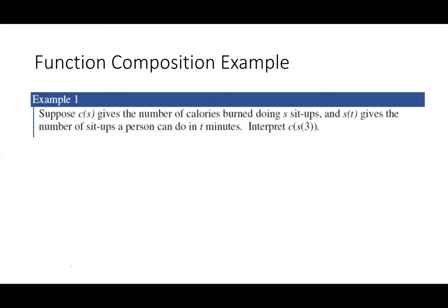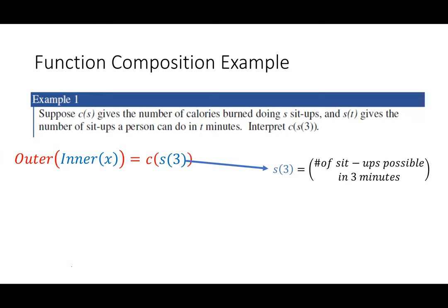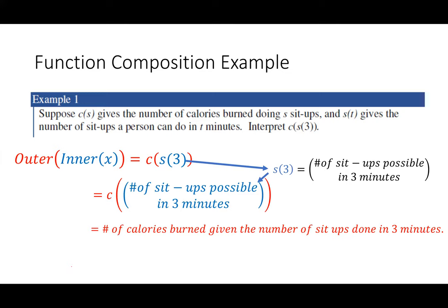Now, suppose you have C of S. That's going to give you the number of calories burned doing sit-ups. And S of T gives the number of sit-ups a person can do in T minutes. Go ahead and interpret C of S of three. Pause the video and do this. What you should have come up with was first discerning that S of three is the number of sit-ups possible in three minutes. Next, C is the number of sit-ups possible in three minutes. That's the input now. So now I'm going to do C of that, which means the number of calories burned, given the number of sit-ups done in three minutes.